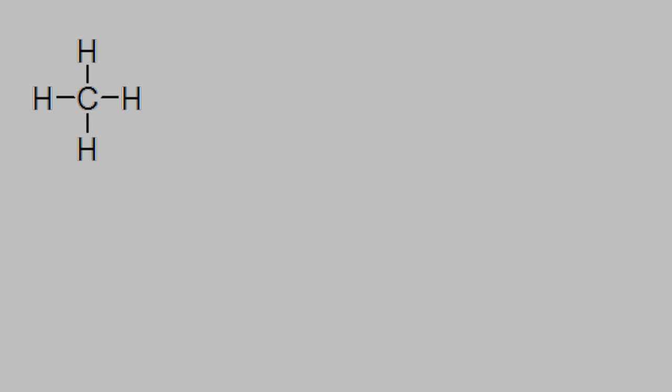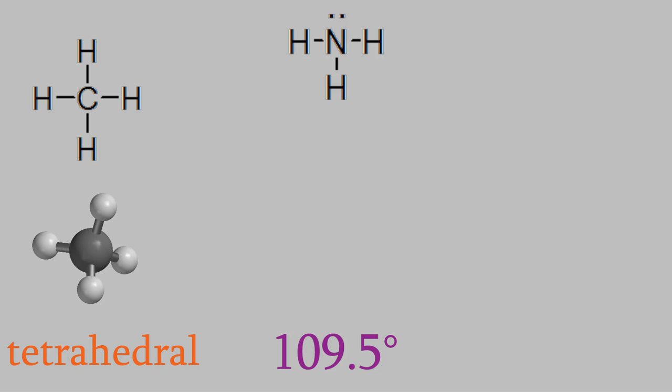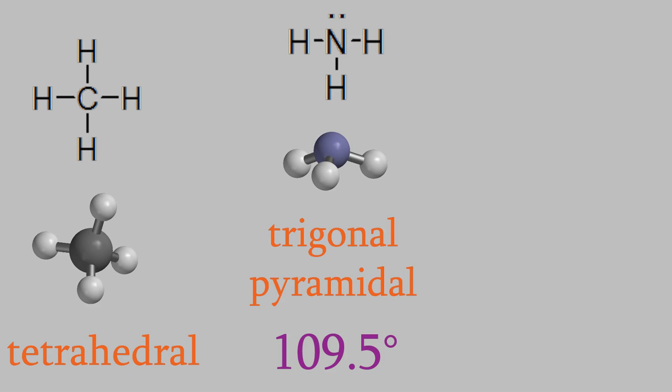Here's another example. We saw last time that methane is a molecule with four bonds on the central atom and no electron pairs. This makes a shape called tetrahedral, with a 109.5 degree angle between the bonds. If we look at the Lewis dot structure for ammonia, you can see it has only three bonds, but there's also an electron pair on the nitrogen. That means the molecule looks like this. There's still an angle of about 109.5 degrees between the bonds, but we can't see the electron pair. That means this shape isn't tetrahedral — instead, it's called trigonal pyramidal.